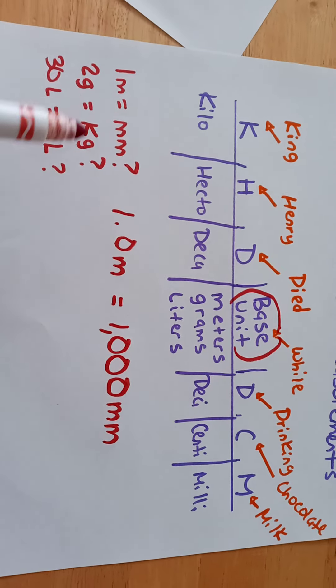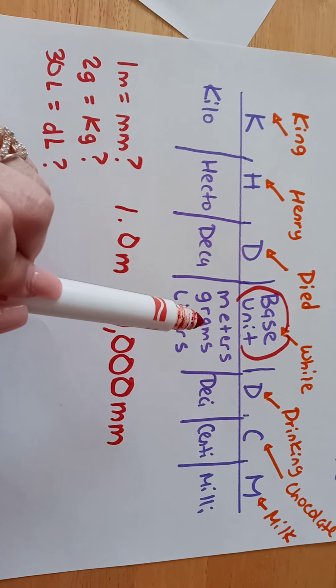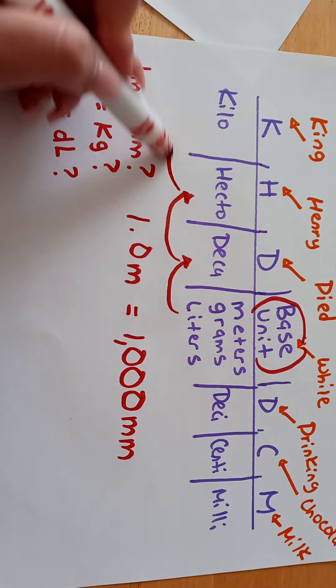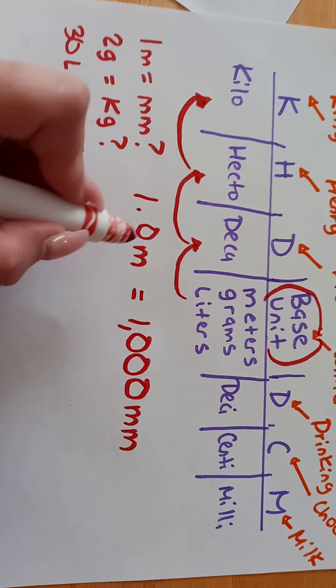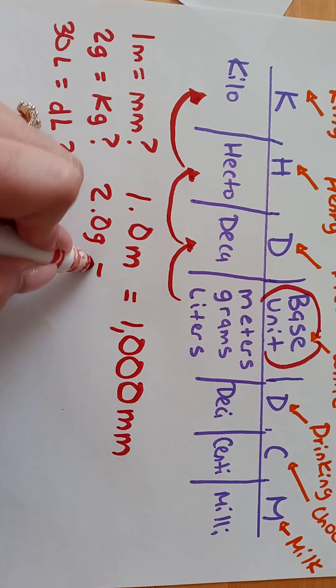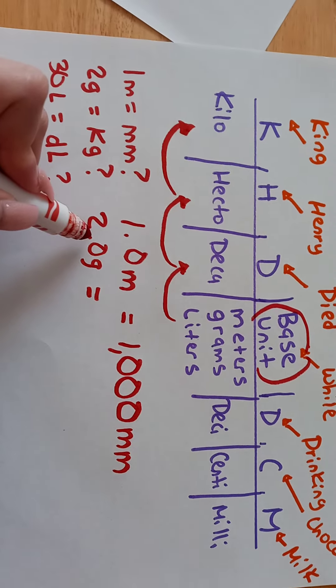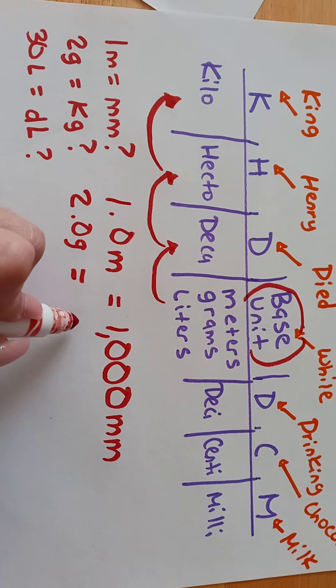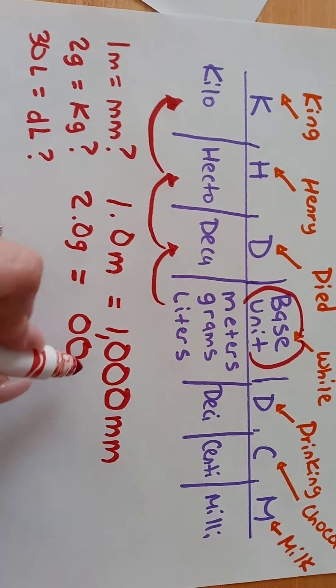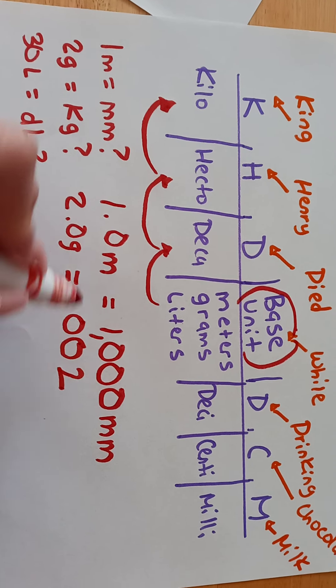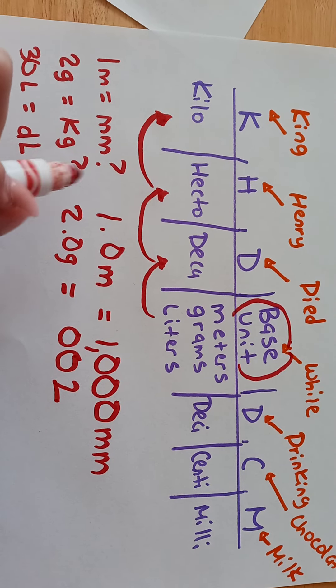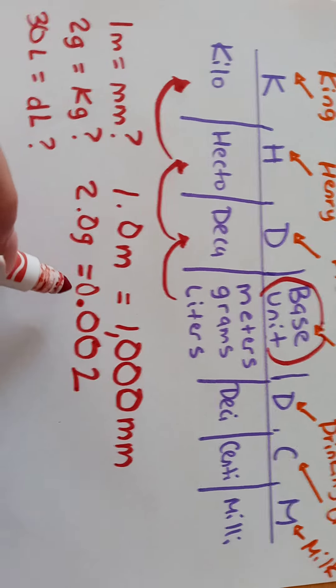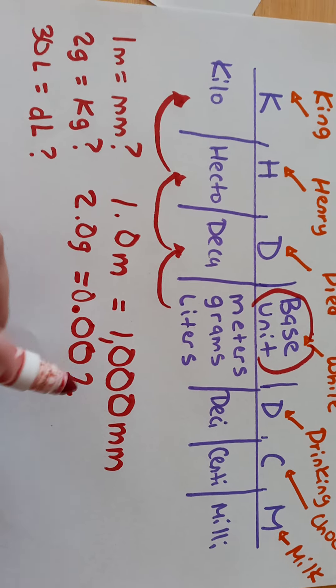Let's try 2 grams into kilograms. Grams will be your base unit right here, and we're moving it 3 spaces, 1, 2, to the left. So 2 grams is equal to how many kilograms? We're moving this decimal place 3 spaces to the left, because we're going to this side. So it's really 1, 2, 3, it's really 0.002 kilograms.